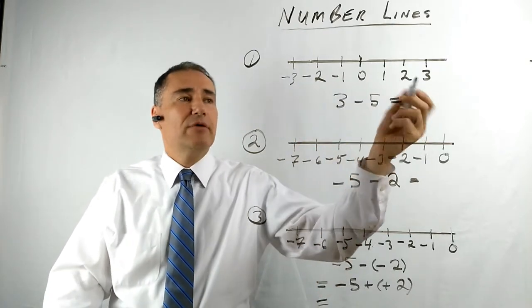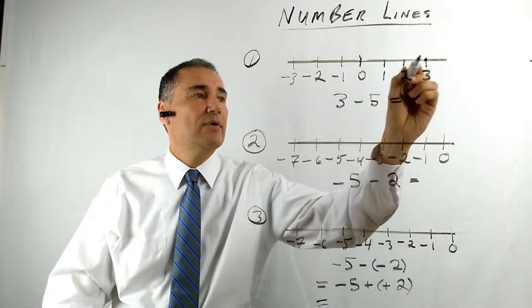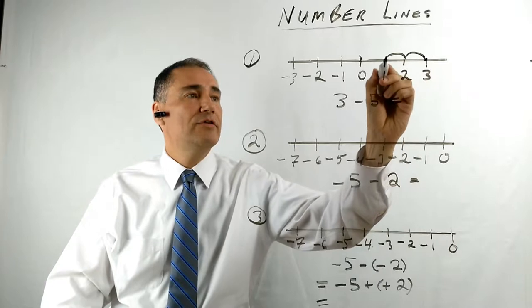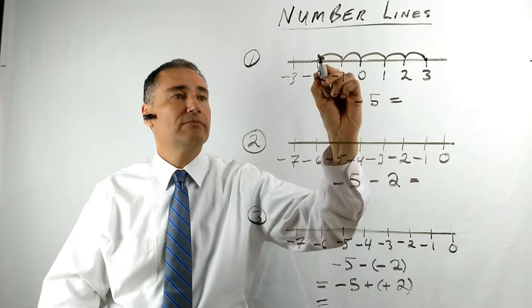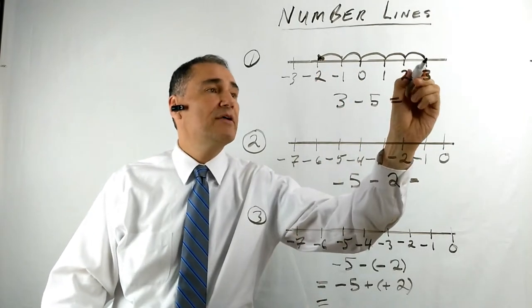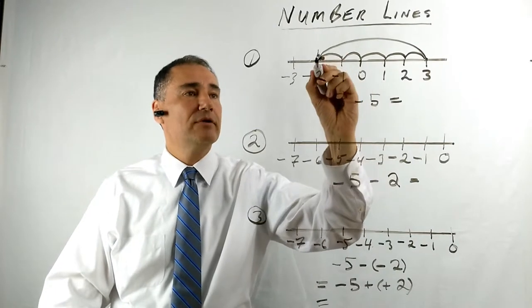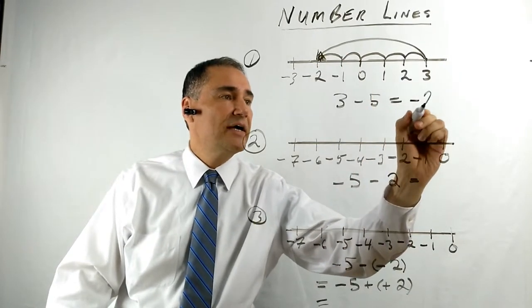So 3 minus 5, how do we do this on a number line? Well, let's start at 3, and we're going to take away 5. So 1, 2, 3, 4, 5 semicircles. And put a little arrow. You're going to be needing that in physics classes one day. So 3 minus 5, and we're going to draw a big semicircle with an arrow. And so that leaves you with minus 2.